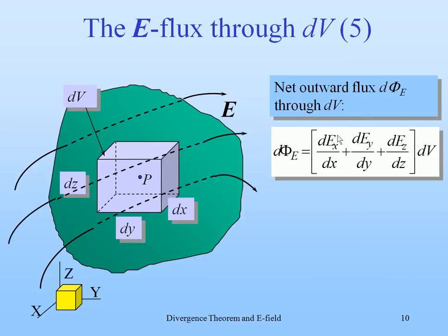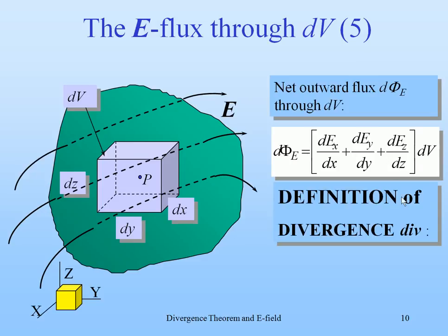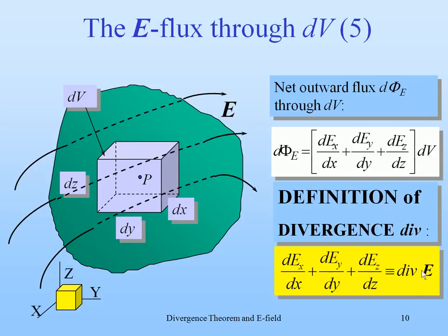So, we have thus this sum of slopes times the volume element, and that is the definition of the divergence. The definition of the divergence notation is div times E. And we can write that the net flux through that volume is the divergence of E times the volume element.